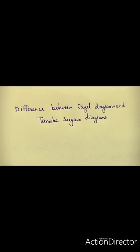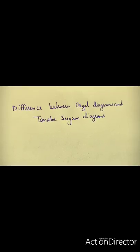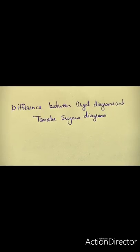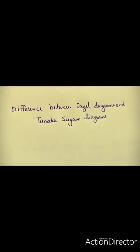Dear students, the topic of this lecture is the difference between Orgel diagrams and Tanabe-Sugano diagrams. This is part of the electronic spectra of transition metal complexes unit. In this lecture, I will discuss the different characteristics of Orgel diagrams and the different characteristics of Tanabe-Sugano diagrams.